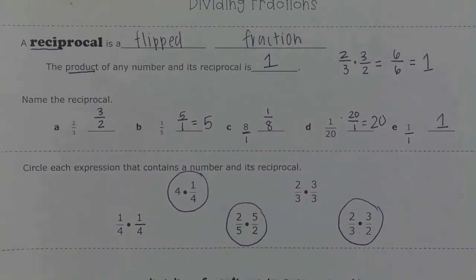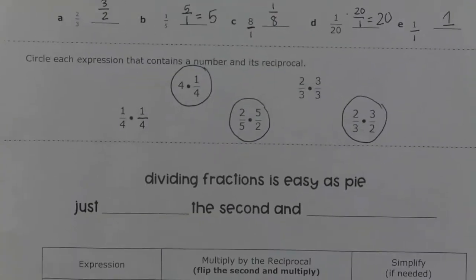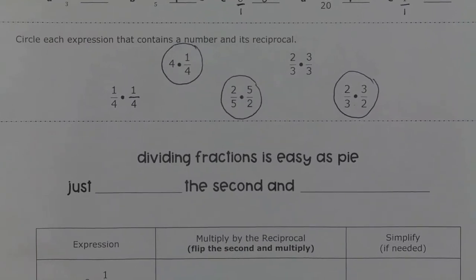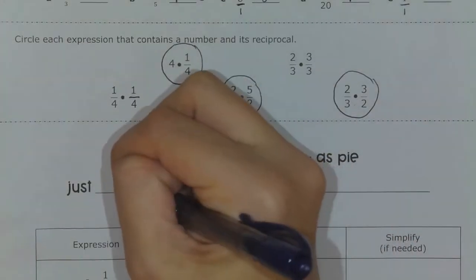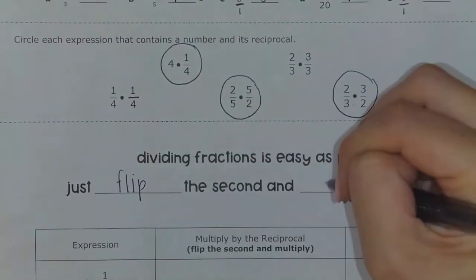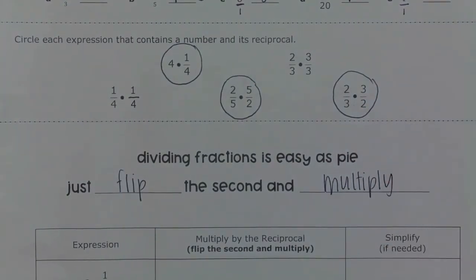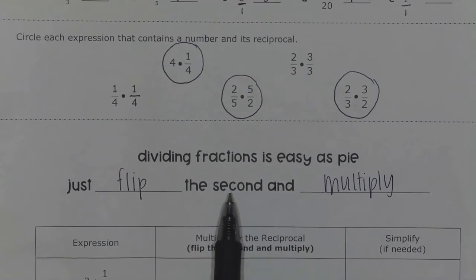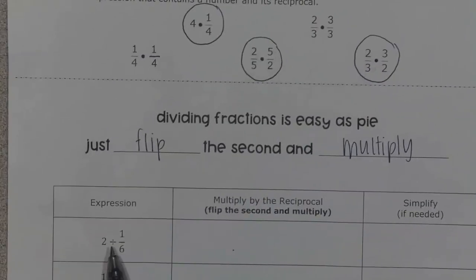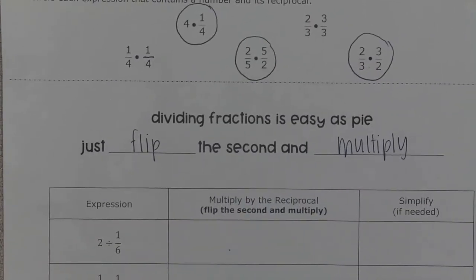The reason that we talk about reciprocals so much when we divide fractions is because when we divide fractions, we really take advantage of that reciprocal. We need it in order to divide fractions. So here's a little saying: 'Dividing fractions as easy as pie — just flip the second and multiply.' What that means is we are going to take the reciprocal of the second fraction and then multiply it times the first number.